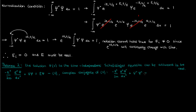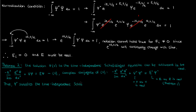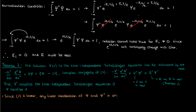Small ψ here is the only term that's actually complex — ℏ and m are constants, the potential V(x) is real, and by the proof of theorem 1, E is also real. So when we take the complex conjugate, we end up with an equation that is exactly the same as the time-independent Schrödinger equation but with ψ* instead of ψ. Therefore, the conjugate of small ψ also satisfies the time-independent Schrödinger equation. Since the equation is linear, any linear combination of ψ and ψ* is also a solution.